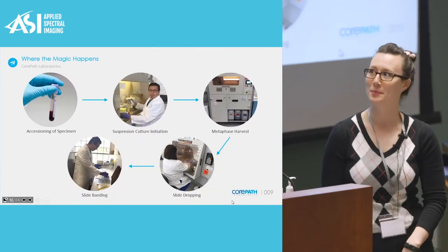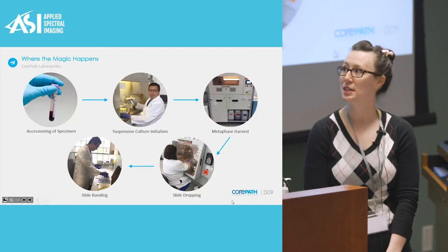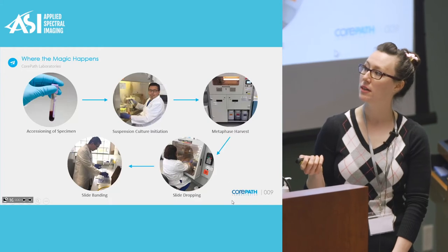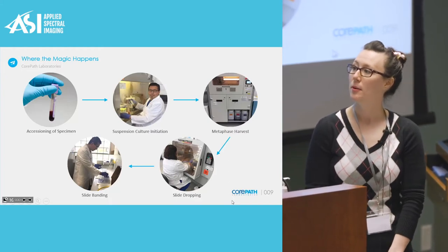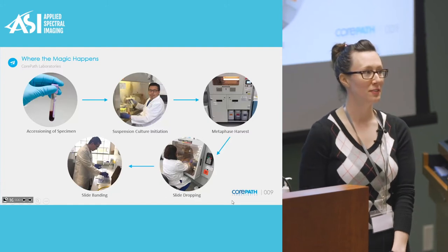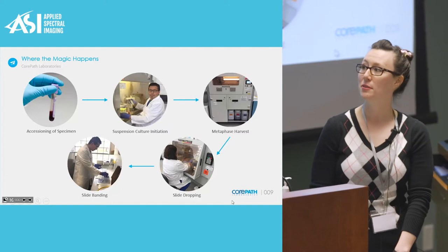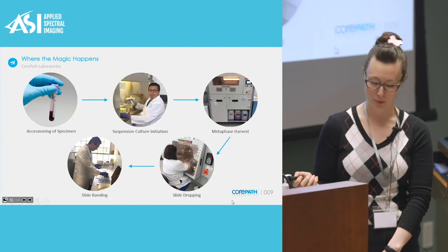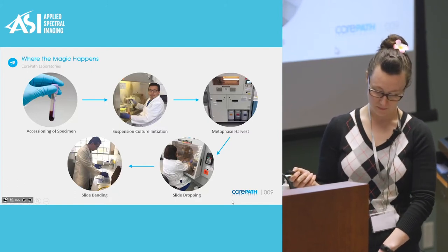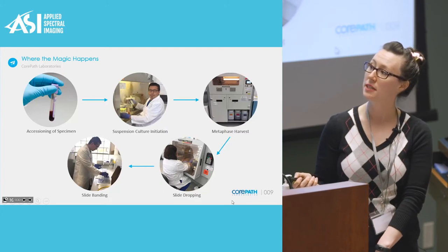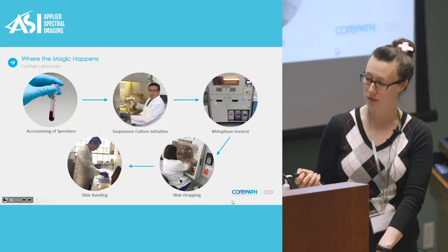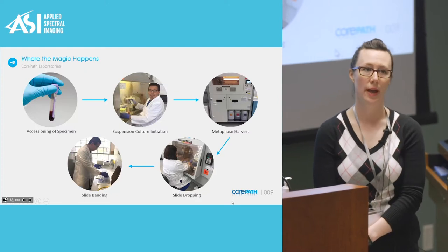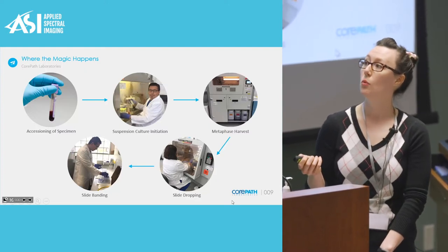Let's move to the fun part — where the magic happens. This is the workflow of how cytogenetics happens at CorePath. First, specimens are accessioned. When you call our laboratory, you'll speak to Jennifer, Bianca, or Jessica in the front — they receive your specimen and accession it, then hand it off to the laboratory. Here we can see Beau initiating our suspension cultures. In our laboratory we do overnight cultures in addition to stimulated cultures, depending on what is needed.